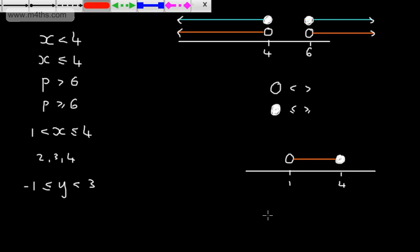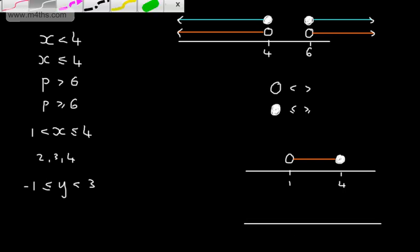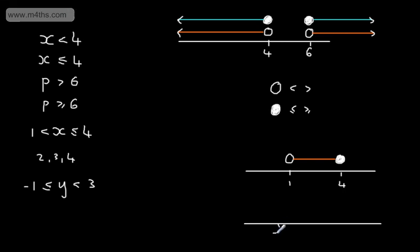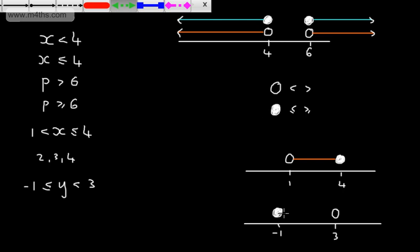For y, we're going to have two values: minus 1 and 3. Let's put these on a number line. Minus 1 is here, and 3 is here. This time the closed dot is at minus 1, as we can include that value, and the open dot is at 3. We draw the line between the two, representing the inequality that y is greater than or equal to minus 1 yet in turn strictly less than 3.